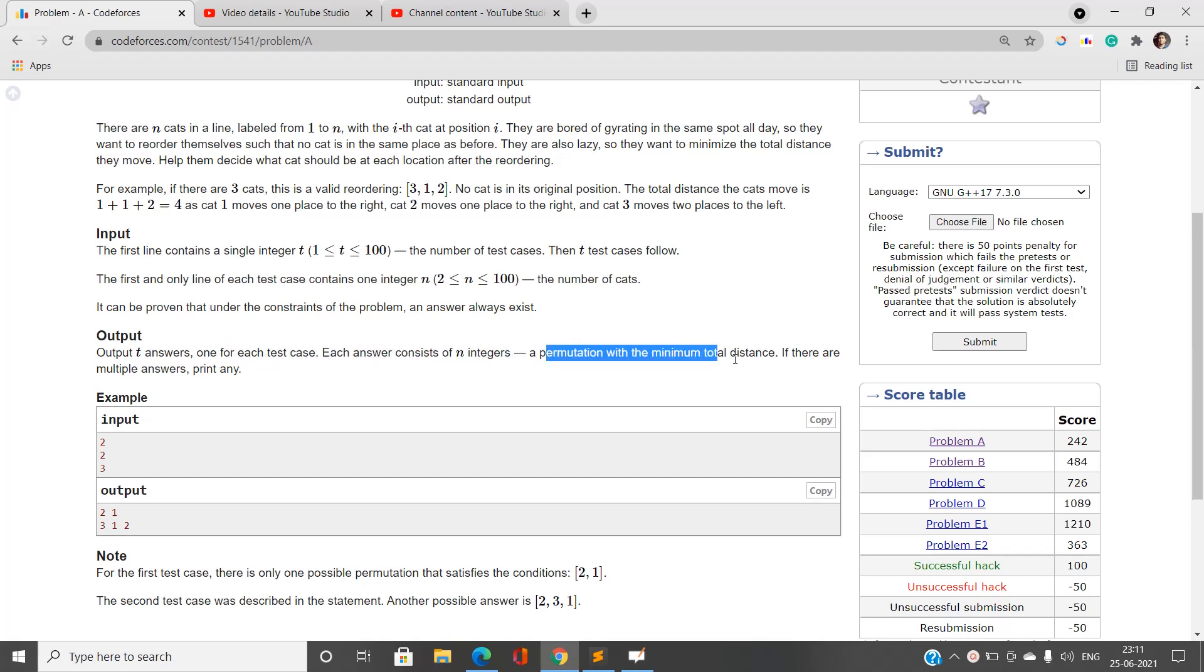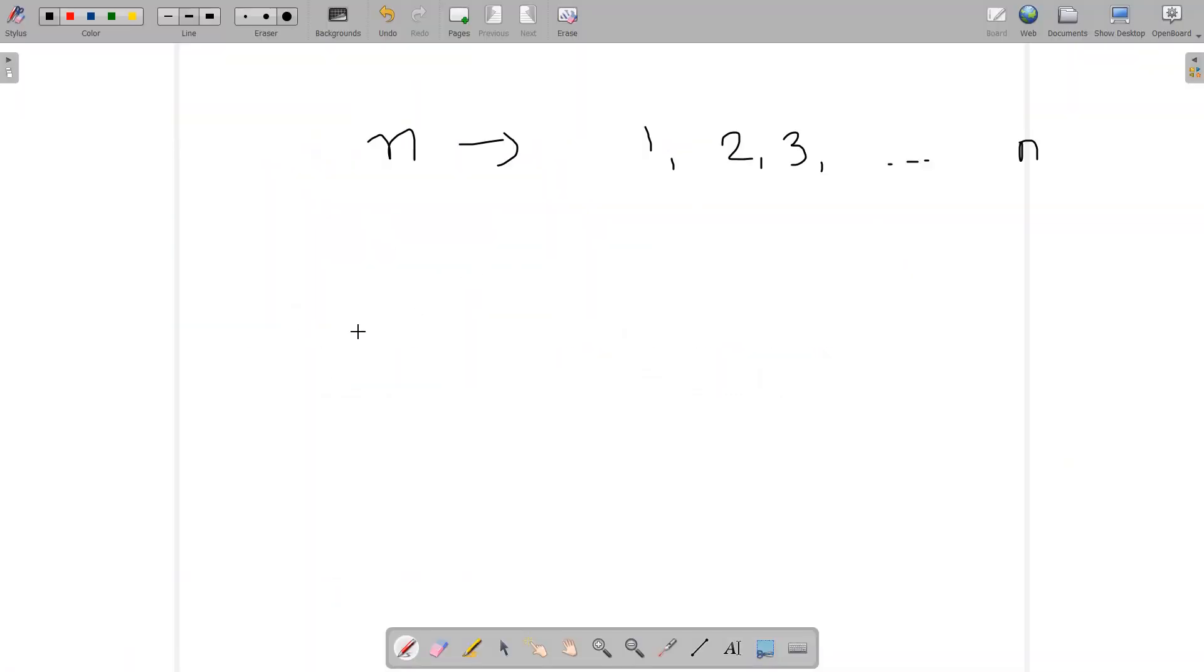Then what is the distance? You need to understand that you want to reorder the cats such that no cat is in the same place as before. So we will have the positions of the cats as 1, 2, 3, 4, 5, and let's say n equals 6. We have the positions of cats in this position, and we want to reorder these positions to some new positions.